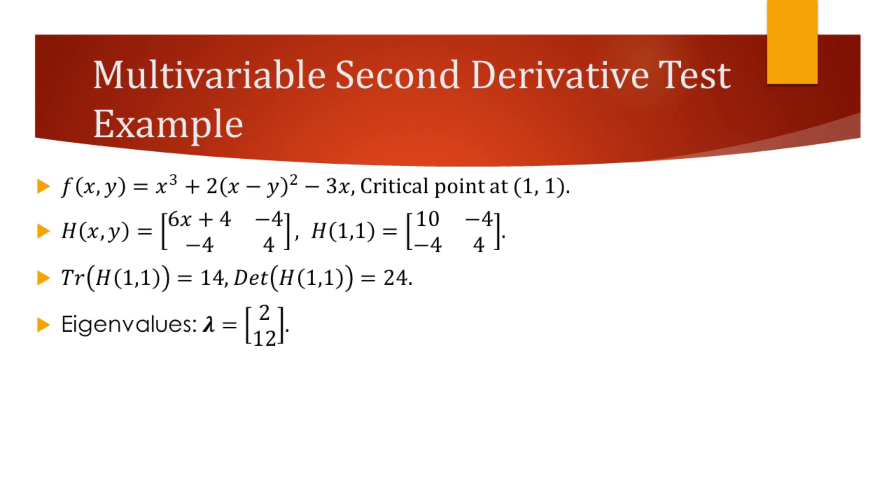If the Hessian was a negative definite matrix, critical point would have been a local maximum. In case it was an indefinite matrix, we would have had a saddle point. For any other case, the test would have been inconclusive.